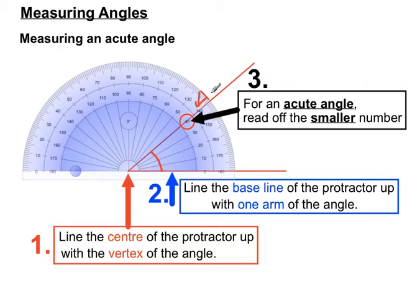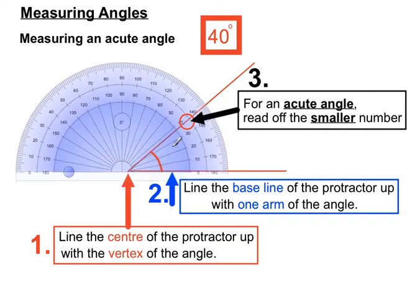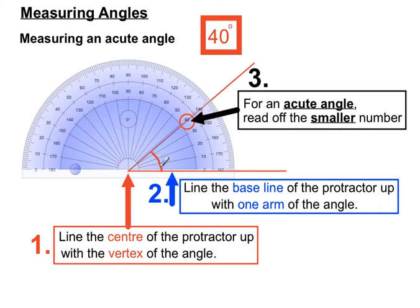So we'll look to read off the smaller number, and so our answer to that is 40 degrees. That's our measurement of that angle. You'll notice the angle itself has a red marking here indicating it's the smaller section of the angle that is the one we're referring to in this particular case. So that's measuring an acute angle.